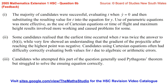Feedback from the marking centre: For part 1, the majority of candidates successfully evaluated t when y dot equals 0 and substituted into the equation for y; parametric equations were more effective than Cartesian approaches. For part 2, some candidates recognised the earliest time was twice the answer to part 1, but very few understood the gradient was negative after the highest point; algebraic errors were common with Cartesian equations. For part 3, candidates generally used Pythagoras' theorem but struggled to solve the resulting equation correctly.